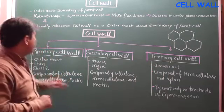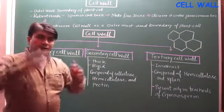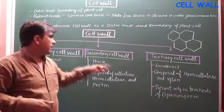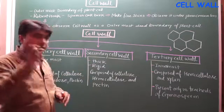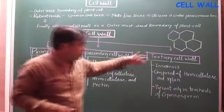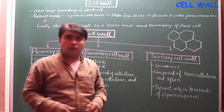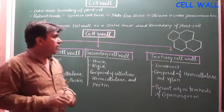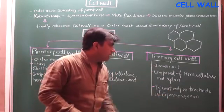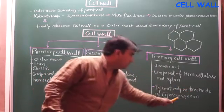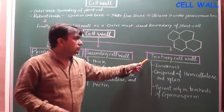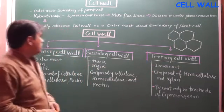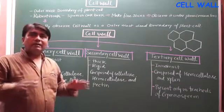The secondary cell wall is the second layer from outside to inside, and it is thick. Below that is the innermost tertiary cell wall. However, the tertiary cell wall is not present in all plant cells — it is only present in gymnosperms, specifically in the tracheids of gymnosperms.